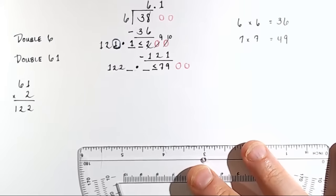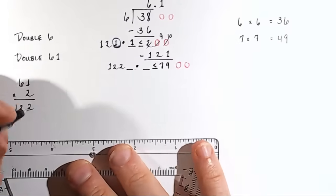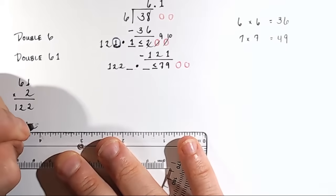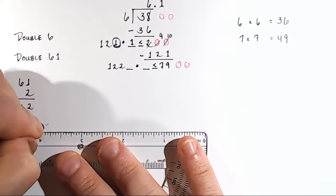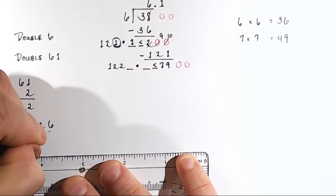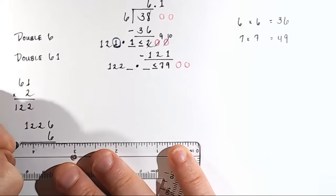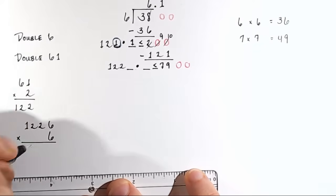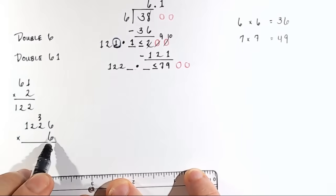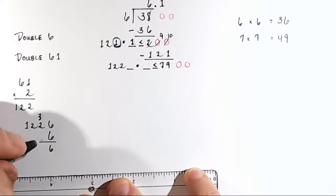All right, so in this example, we'll try 6. Before we put it, let's try it. 1, 2, 2, 6, times 6. Let's see what that is. 6 times 6 is 36. Carry the 3. 6 times 2 is 12, plus 3 is 15. Carry the 1.